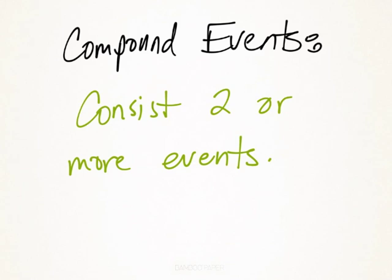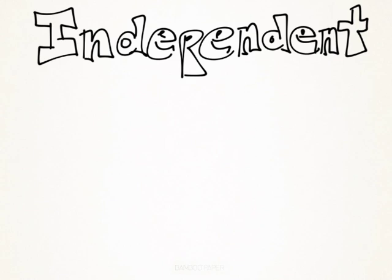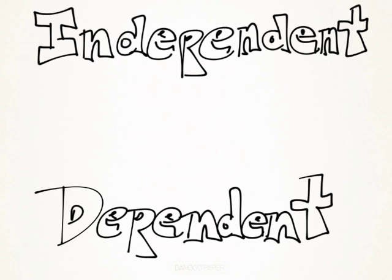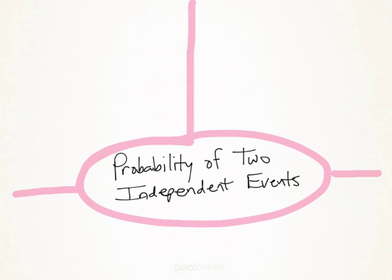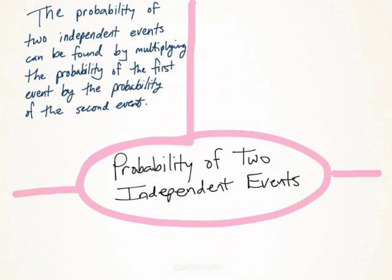Compound events consist of two or more events, and there are two types: independent events and dependent events. You can think of these in terms of science, with an independent variable and a dependent variable. We're going to look at the probability of two independent events first, and basically the way you solve these is just take the fraction of each event and multiply them together.